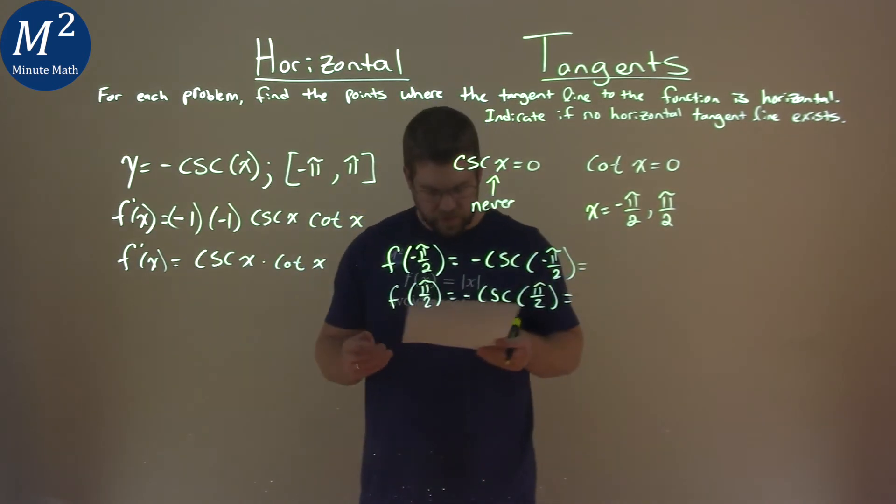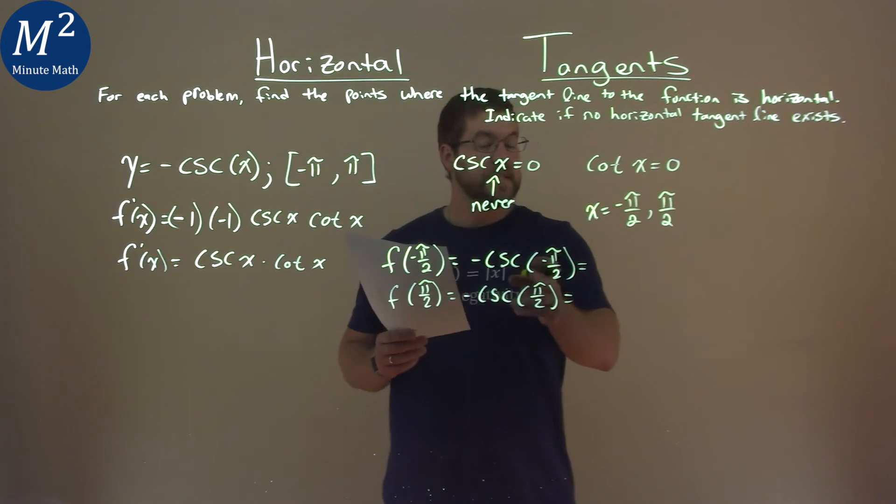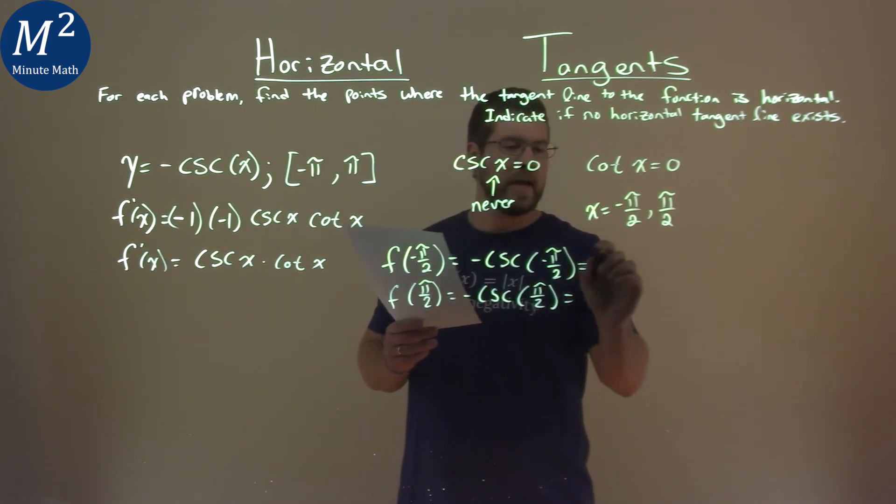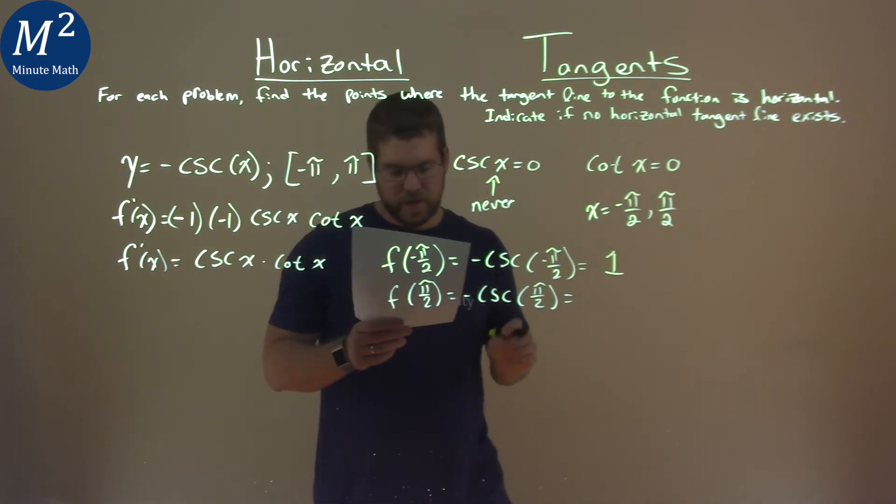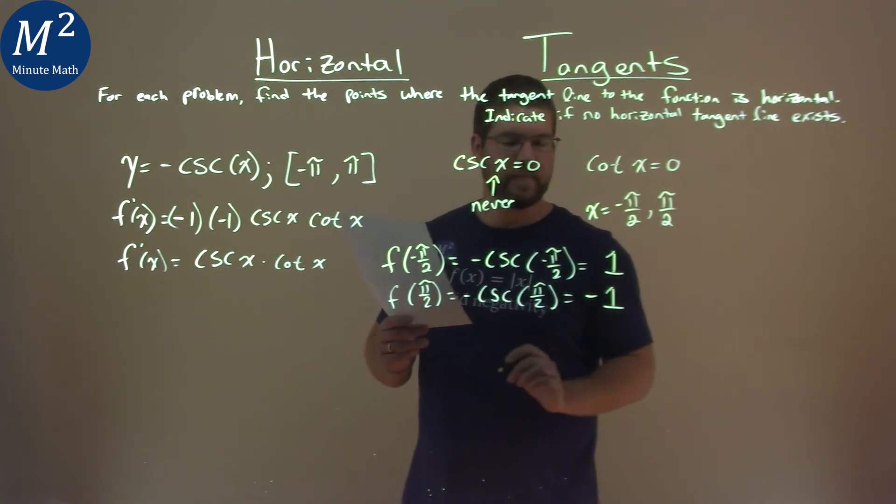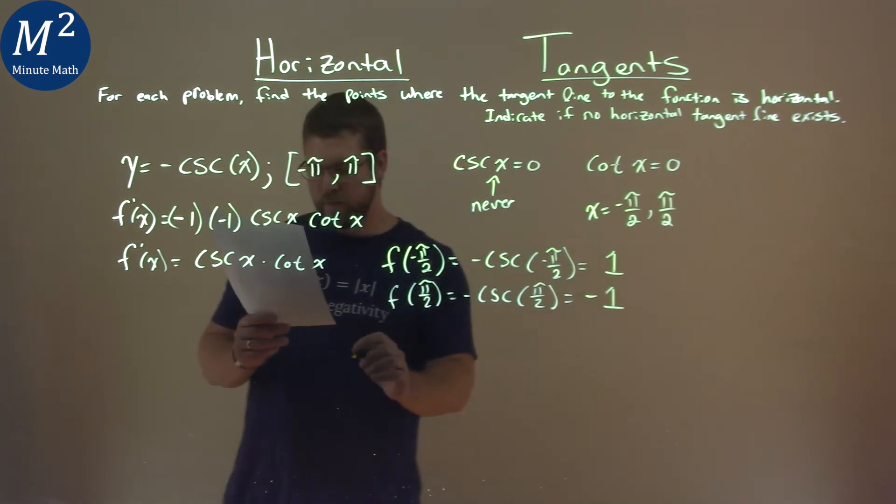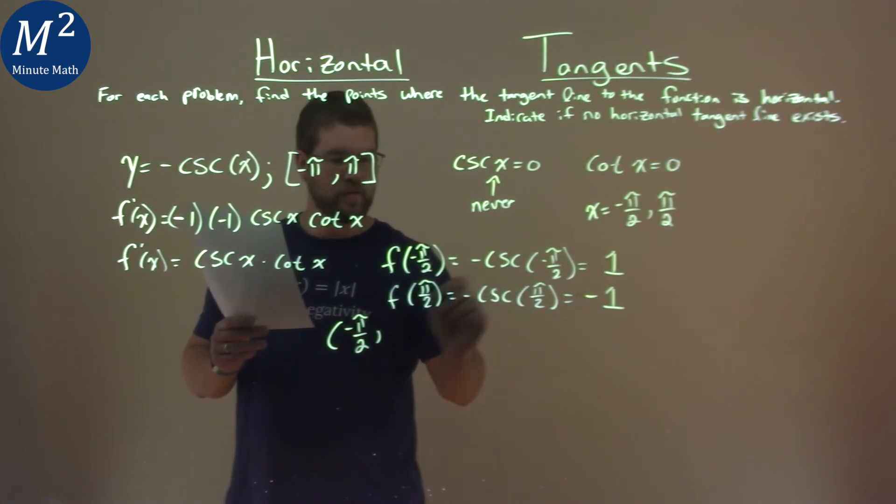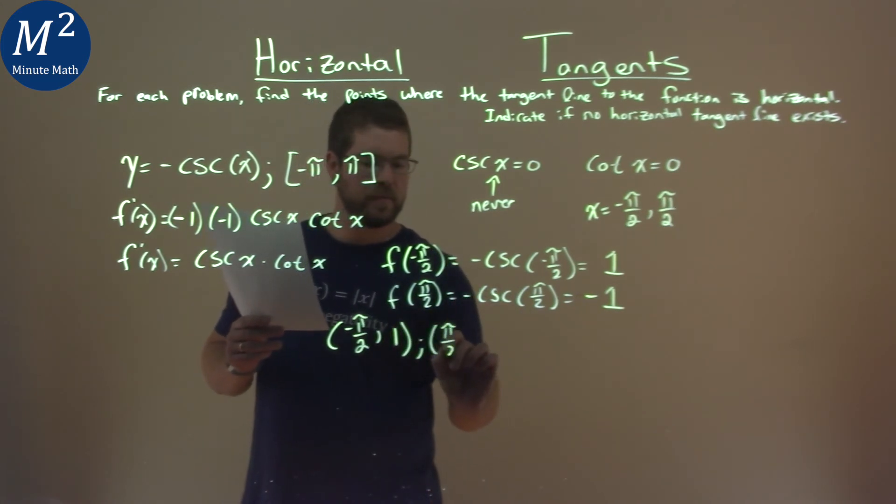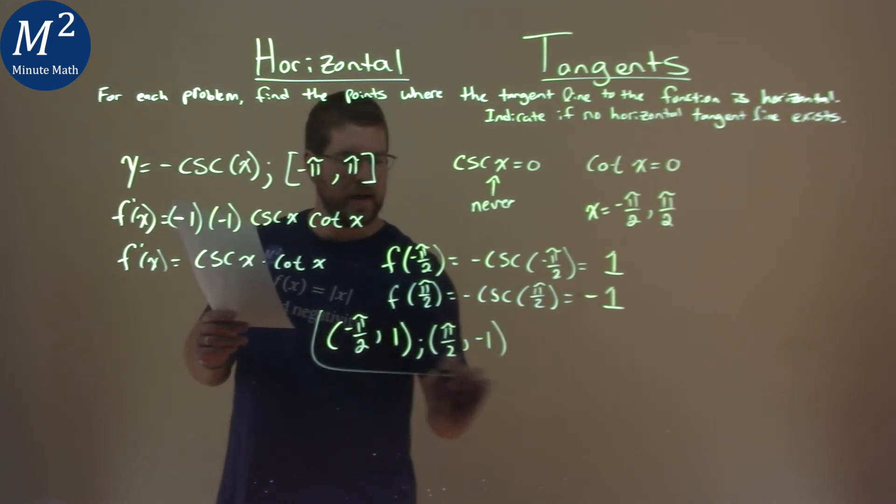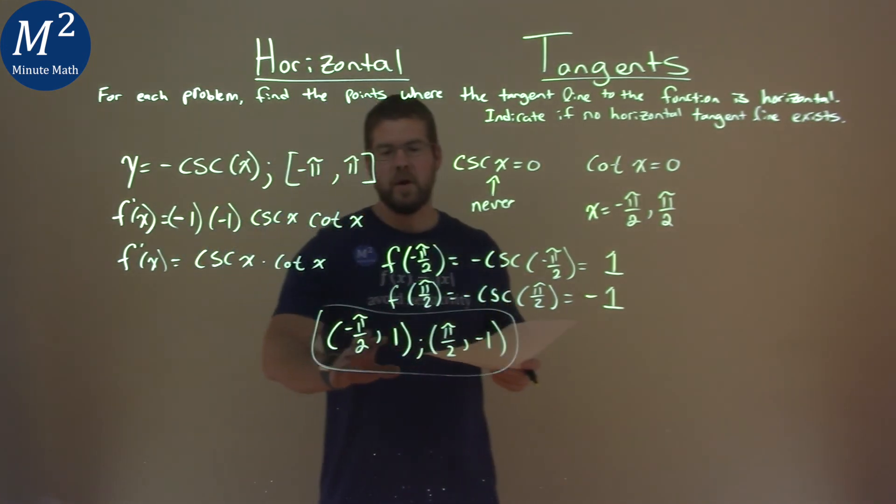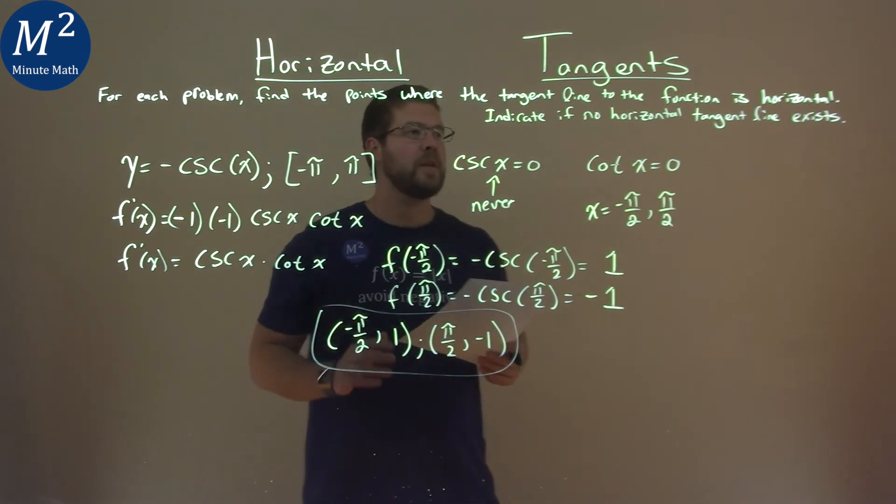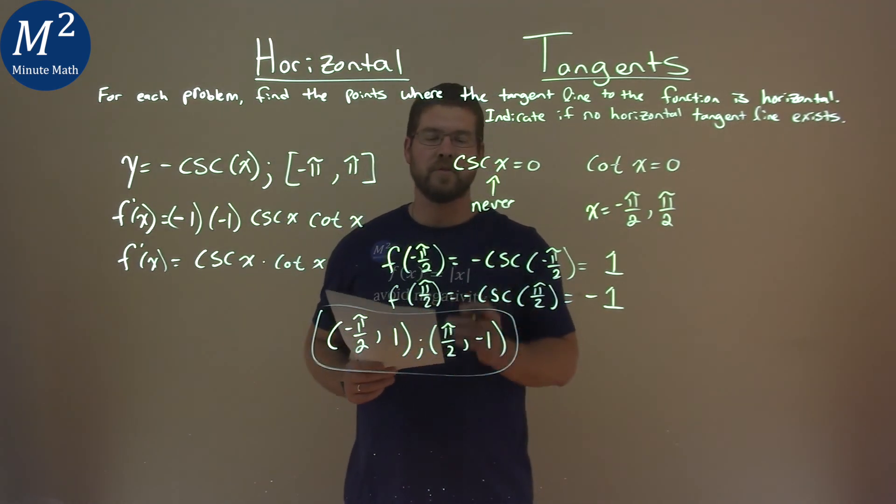And what do they equal? Well, the negative cosecant of negative pi over 2 cancels out the negatives, and we have a positive 1 there. The negative cosecant of pi over 2 is negative 1. And so with that, our coordinate points here are negative pi over 2 comma positive 1, and pi over 2 comma negative 1. And these two coordinate points are where the tangent line of our original function is horizontal.